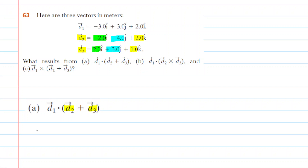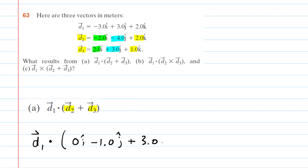We'll leave vector d1 alone for now. Inside the parentheses, we'll just add the components. The x components added together give us 0 i hat. We add the y components and get negative 1 j hat, and then we add the z components and get positive 3 k hat.